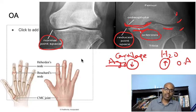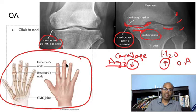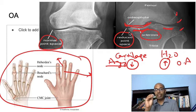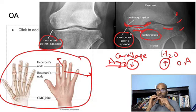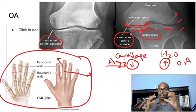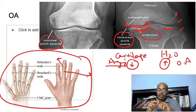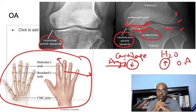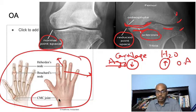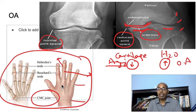In the hand with osteoarthritis, the DIP joint and the PIP joint are involved. They form bumps on the dorsal aspect. The bump at the distal interphalangeal joint is called Heberden's nodes, and the one at the PIP joint is called Bouchard's nodes. Remember: B comes before H in the alphabet, so Bouchard's nodes are proximal (PIP) and Heberden's nodes are distal (DIP). These bumps are seen along with CMC joint involvement.